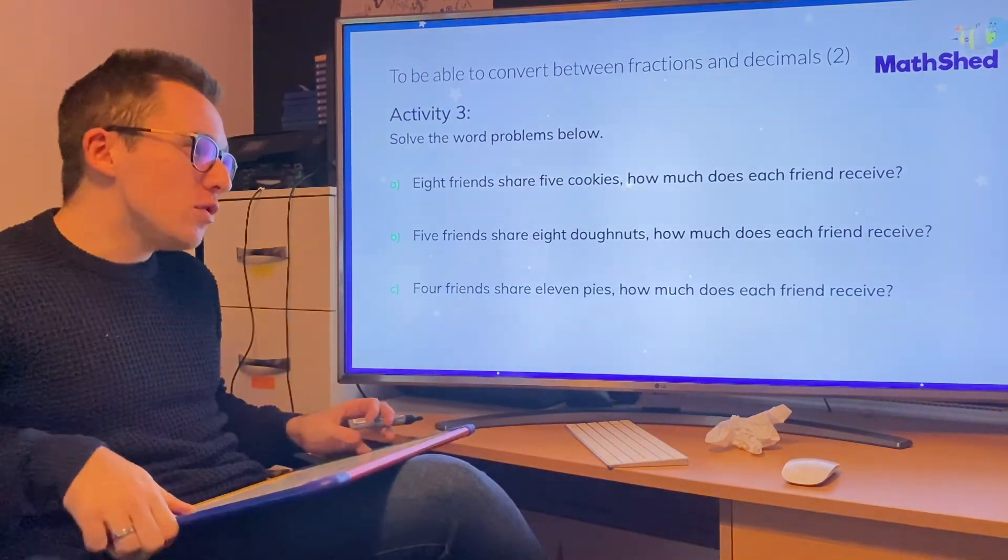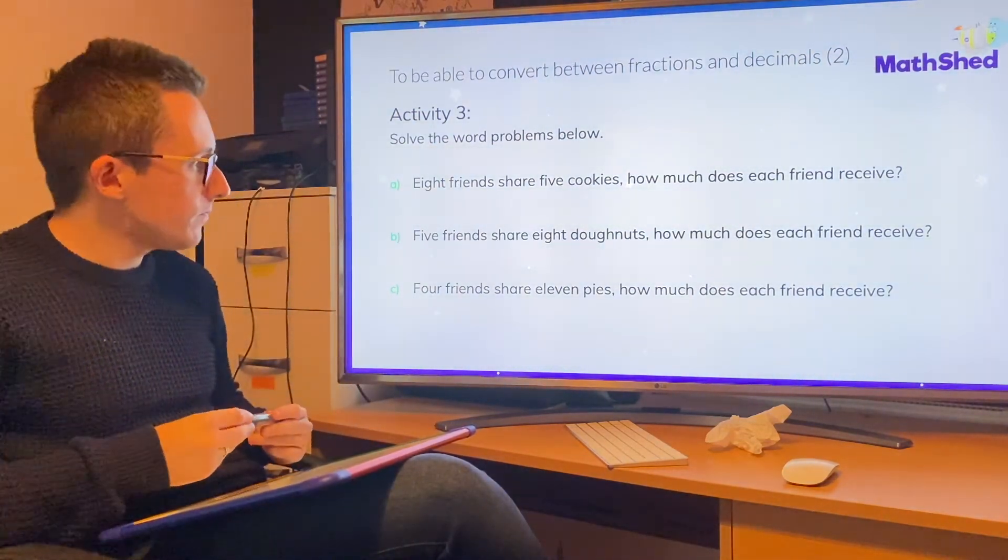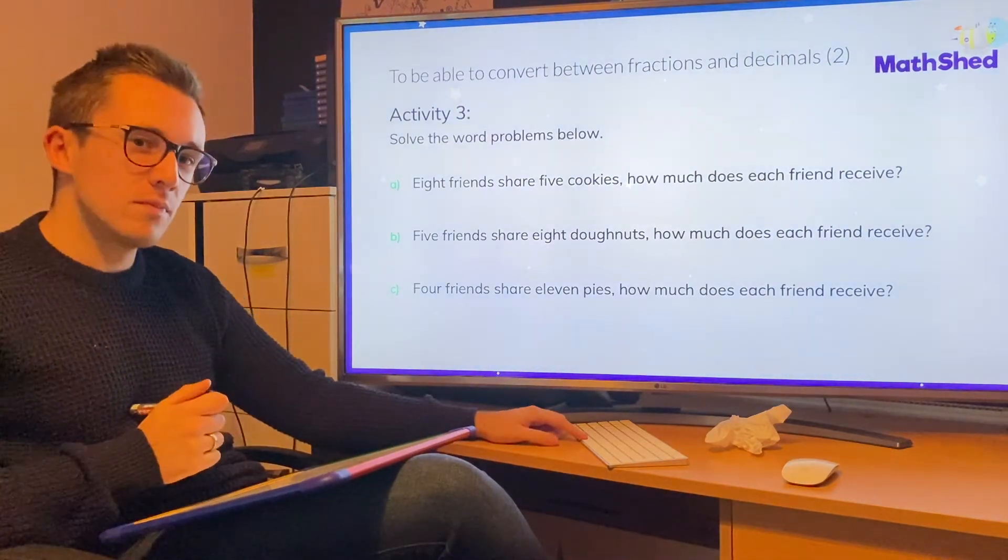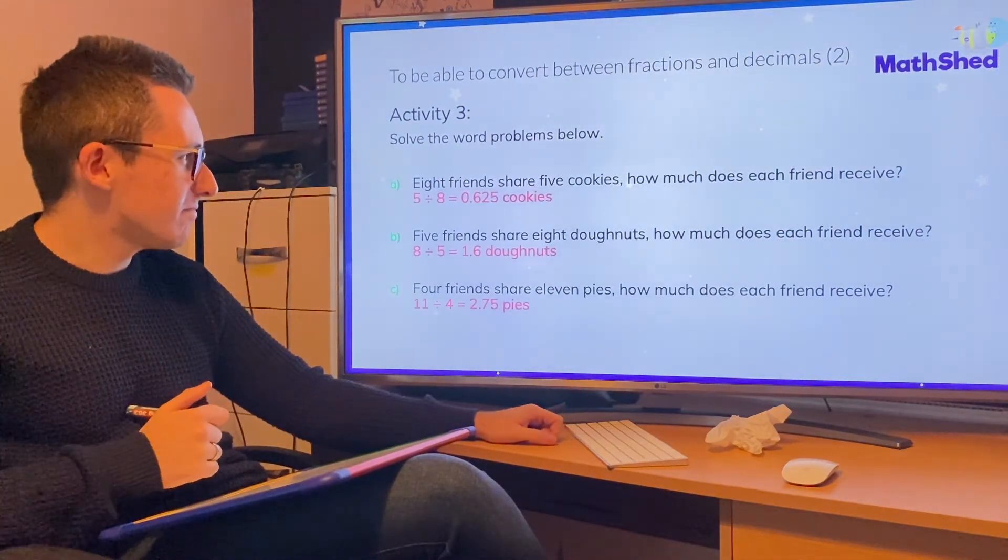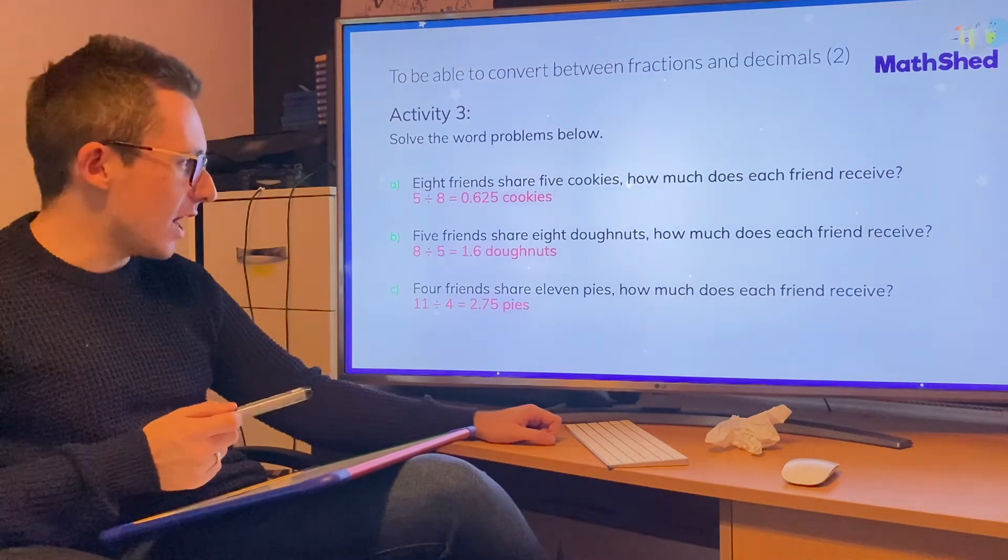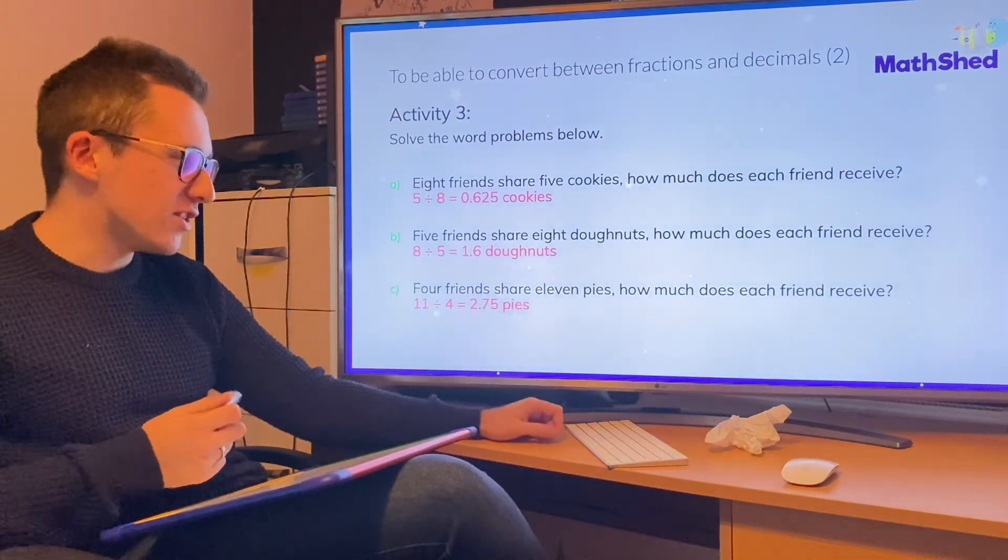See if you can use that to have a go at the other two. And here are your answers: 0.625 is the one we did together, 1.6 and 2.75.